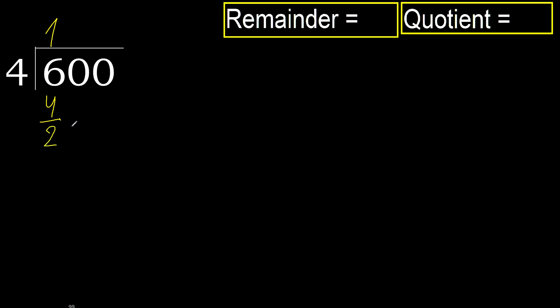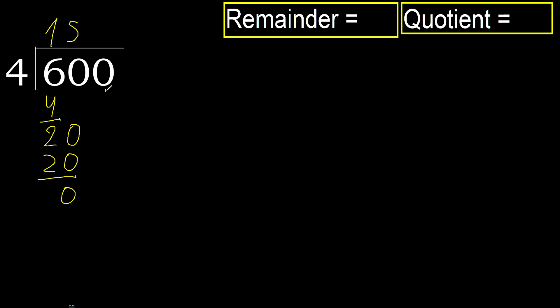Next: 20. 4 multiplied by 5 is 20, it is not greater. 20 minus 20 is 0. Next.